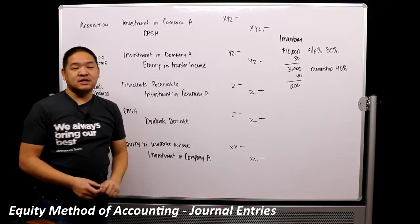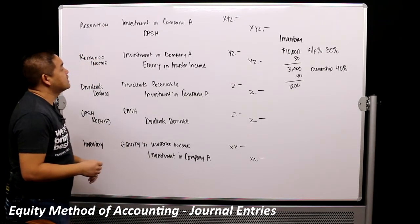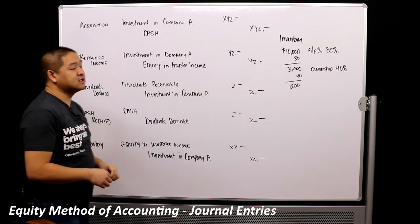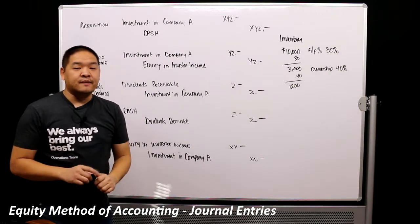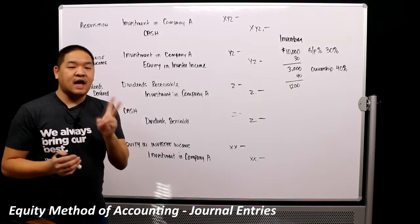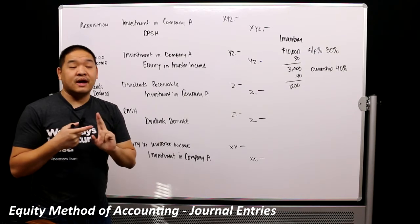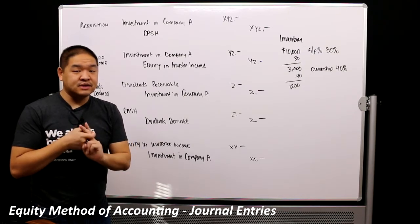Cash is like an asset, decreases in assets are credits. So credit cash for $100,000 and debit this new account called investment in Company A. So we go down the road. At the end of the year, we're going to have two things happen. One thing is we're going to have to book a net income, and another thing that we're going to have to book is the dividend if we receive a dividend.